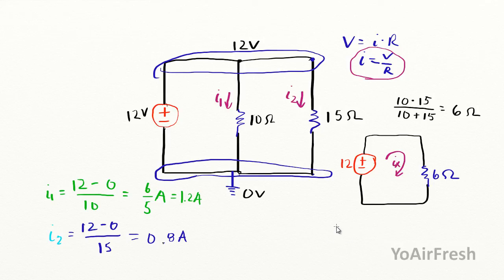Looking for I sub x here: I equals V over R equals 12 volts over the 6 ohms, and that's going to equal 2 amps. You can see that our 1.2 plus the 0.8 amps does equal the 2 amps that we have. Some people might call this I total.